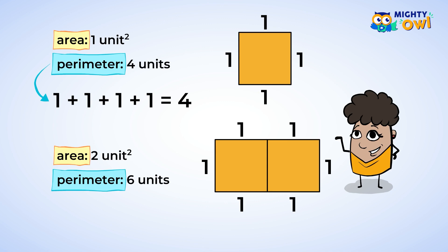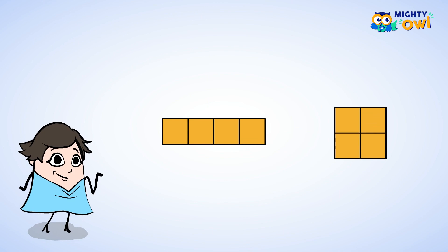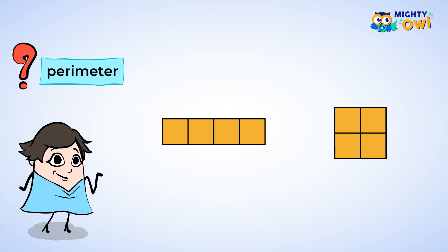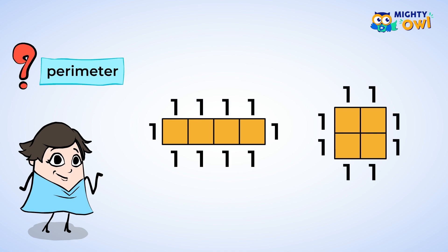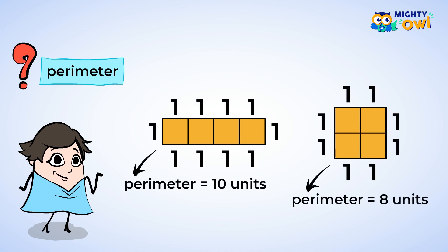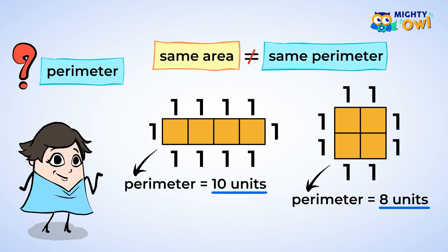Let's continue exploring. Let's look at shapes that have an area of four square units. Here are two shapes that both have an area of four square units. But what is the perimeter of each of these shapes? Let's count the sides and find out. Even though some shapes may have the same area, that does not mean that they automatically have the same perimeter.